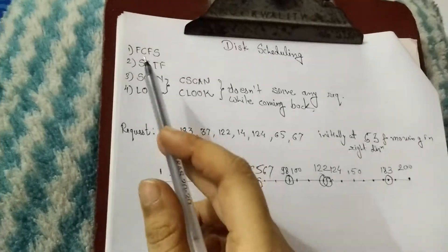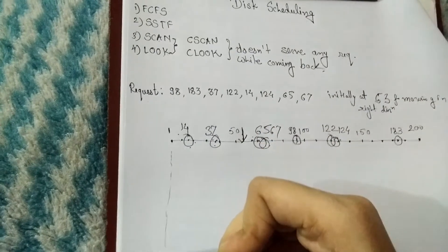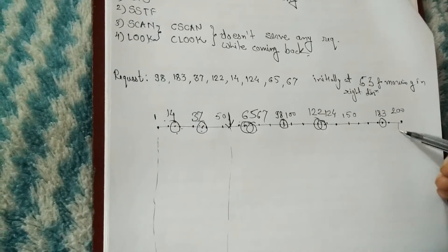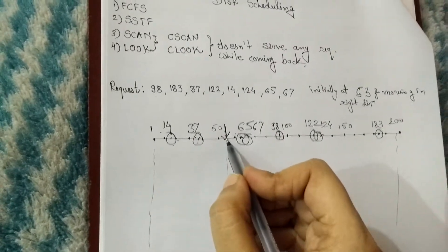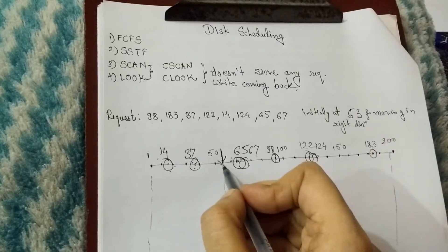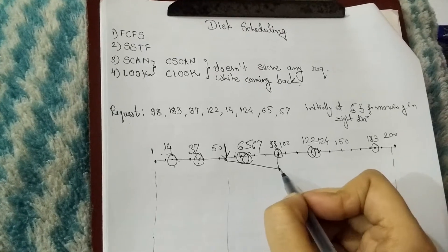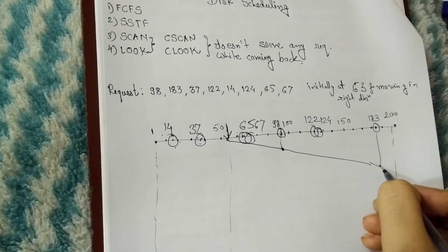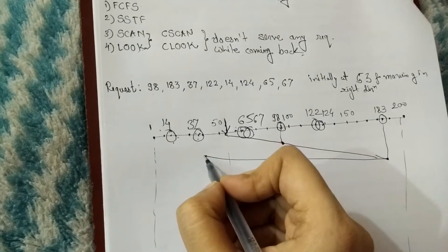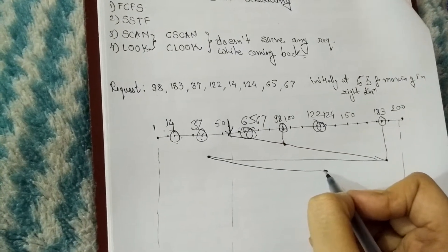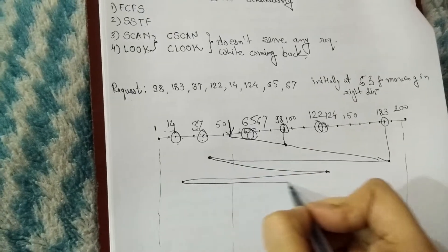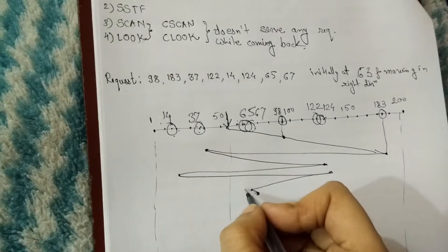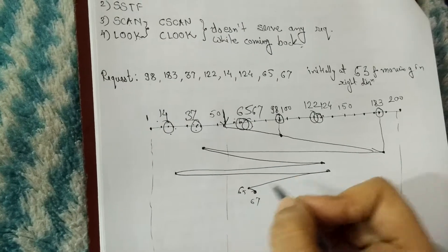First we will implement First-Come-First-Serve. Currently we are on cylinder 53. FCFS serves requests in the order they arrive: first 98, then 183, then 37, then 122, then 14, then 124, then 65, and lastly 67.